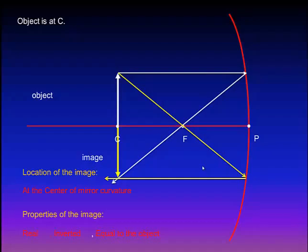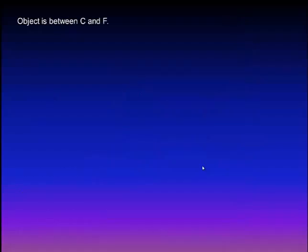Note that this is the only case in which you will be asked about the size of the image. For example, the question will be: if the object is placed at the center of mirror curvature and the size of the object was 4 cm, what will be the size of the image? In this case, the size of the image is equal to the size of the object, and it will be equal to 4 cm also.